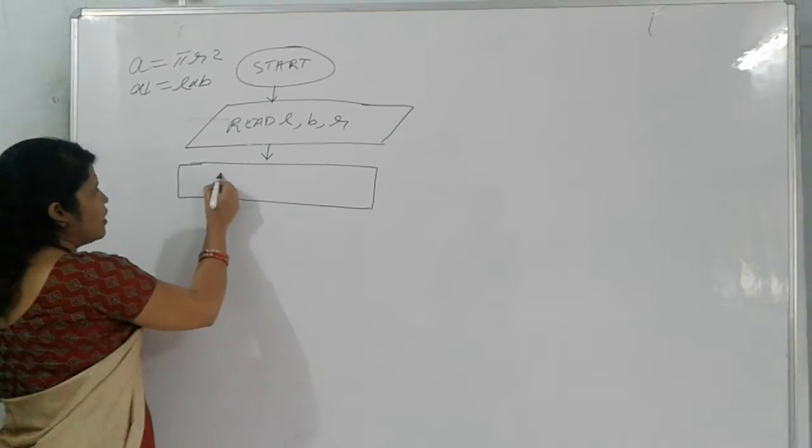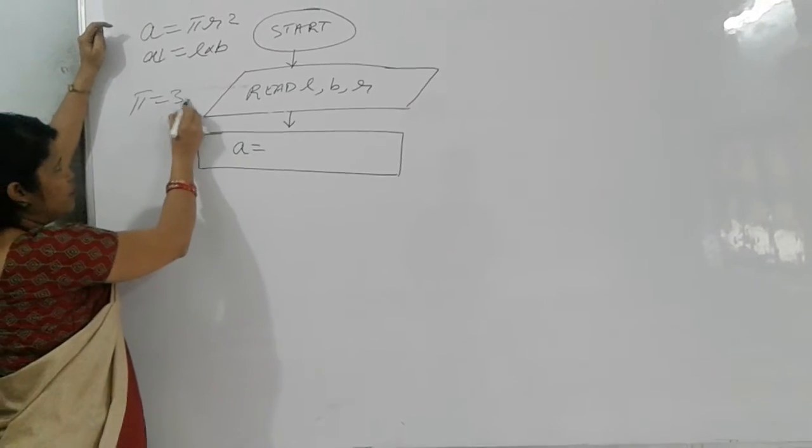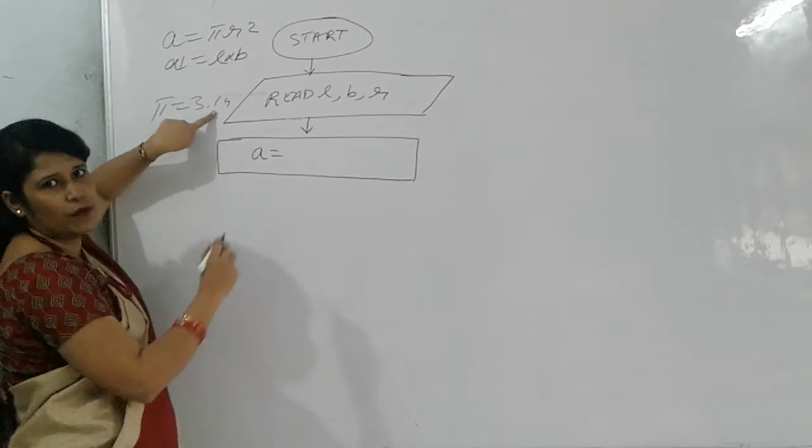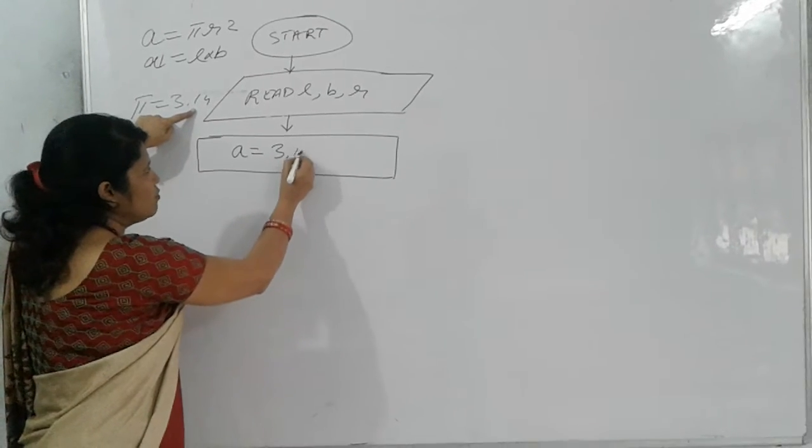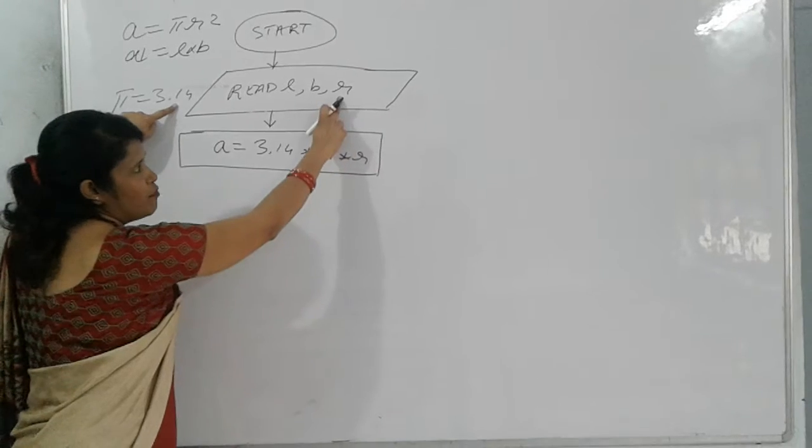So we write a is equal to pi. Now pi value is what? 3.14. So we will write the value of pi, that is 3.14 into r into r, where r is radius.